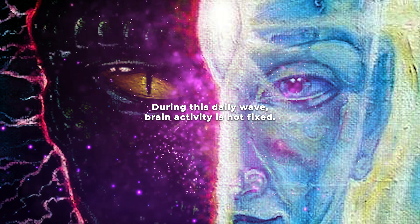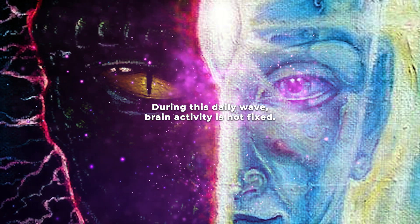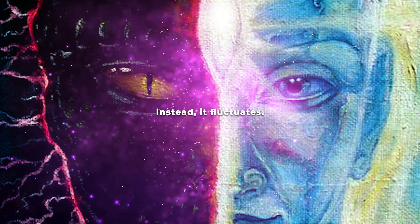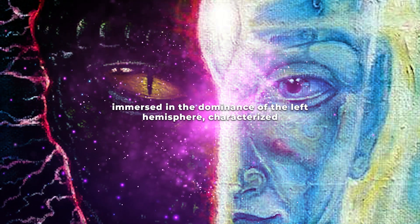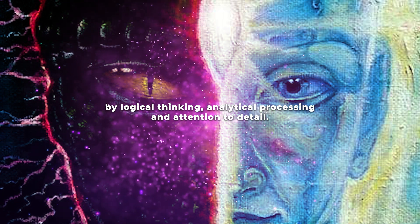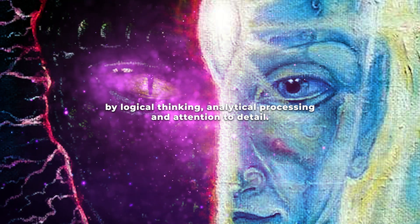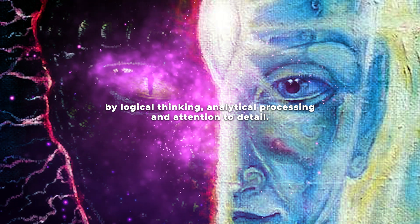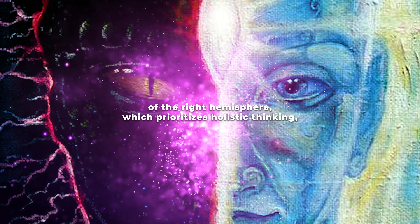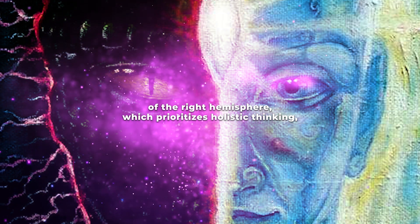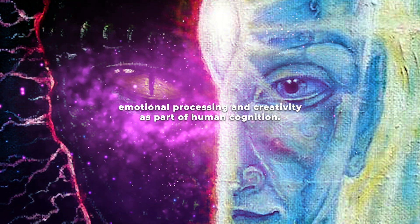During this daily wave, brain activity is not fixed; instead, it fluctuates. Sometimes, we find ourselves immersed in the dominance of the left hemisphere, characterized by logical thinking, analytical processing, and attention to detail. At other times, we transition to the dominance of the right hemisphere, which prioritizes holistic thinking, emotional processing, and creativity.